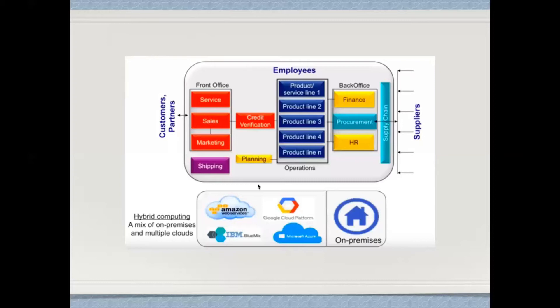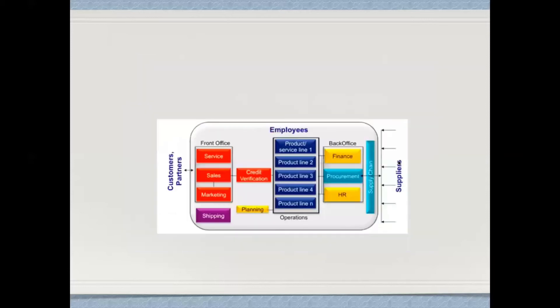If you look at any organization, we have the front office — with sales, marketing, and service — and the back office — with finance, procurement, HR, and supply chain — along with business operations that produce products or services. Digitalization and digital transformation of organizations is happening in a number of ways.